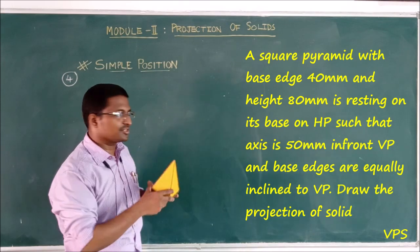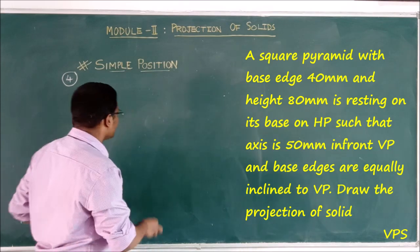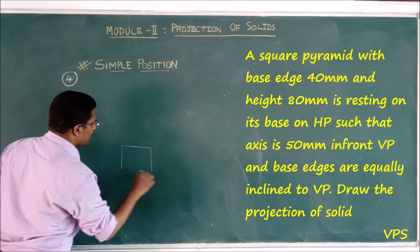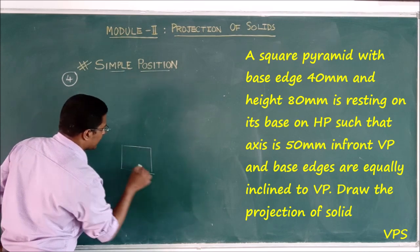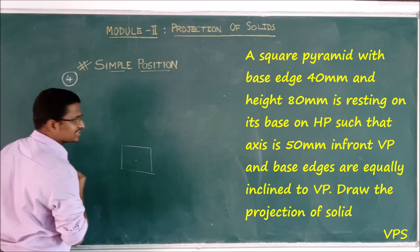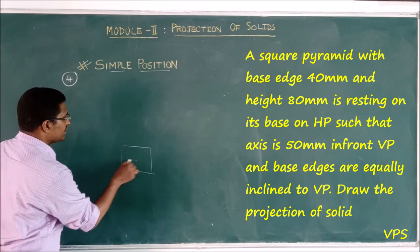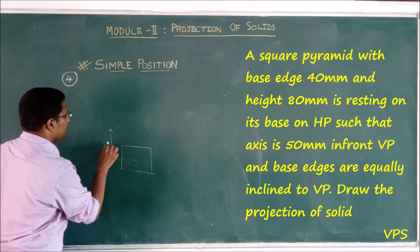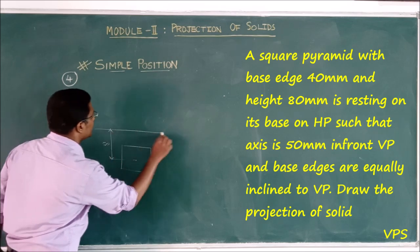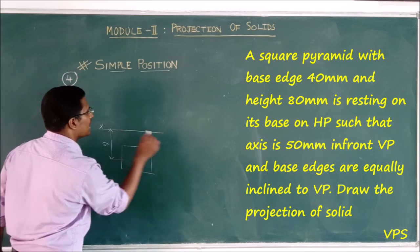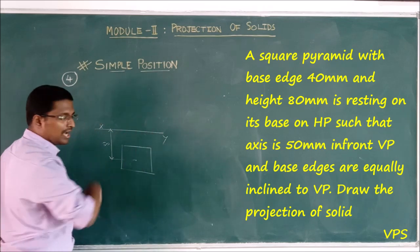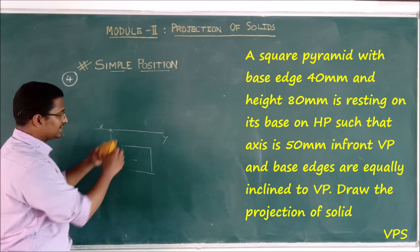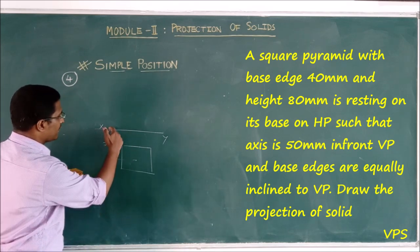The axis is 50mm in front of VP. So the distance from the xy-line is 50mm. That is the xy angle — how much is it? 50mm in front of VP.